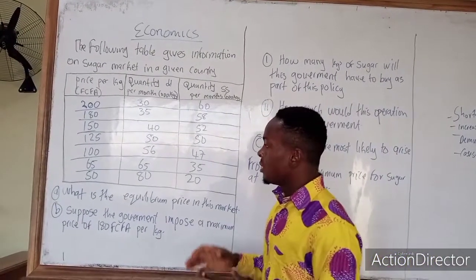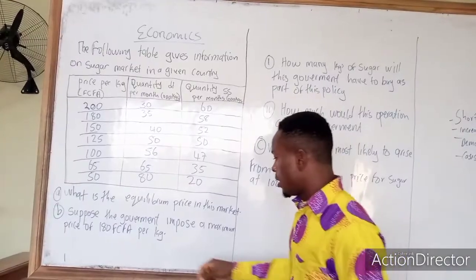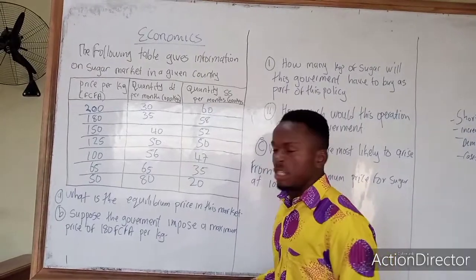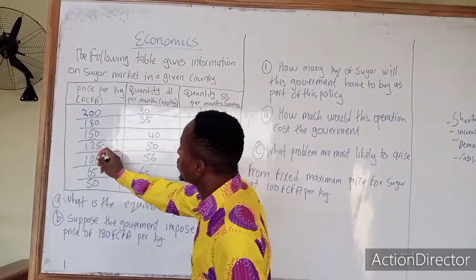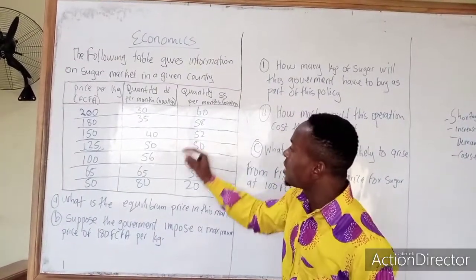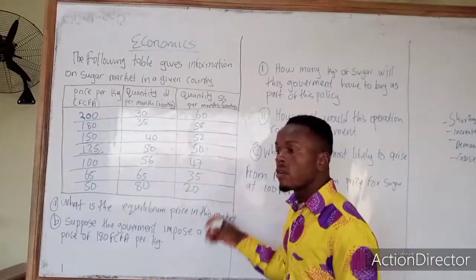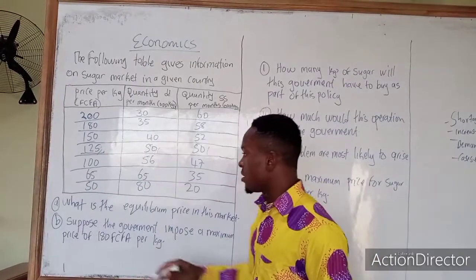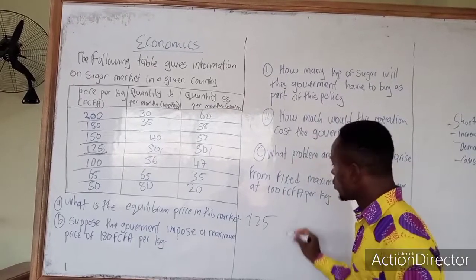The question asks: what is the equilibrium price in this market? As demonstrated in previous videos, the equilibrium price is where the quantity demanded and the quantity supplied are equal. The equilibrium price is 125 because at that price the quantity demanded is 50 and the quantity supplied is 50. Therefore, the equilibrium price is 125,000 Francs CFA and the equilibrium quantity is 50,000 kg.